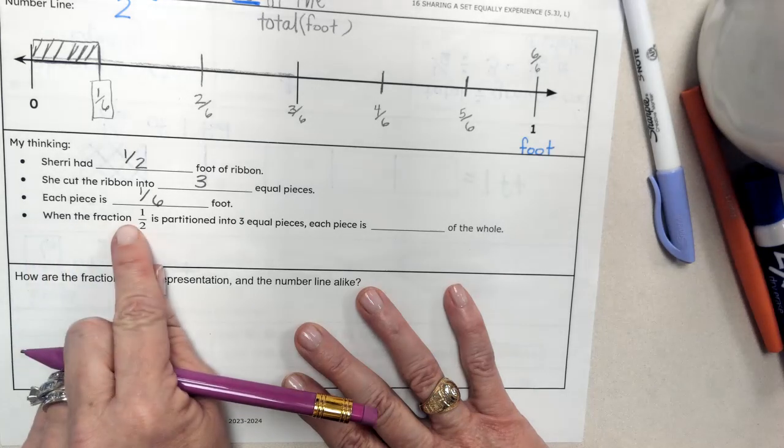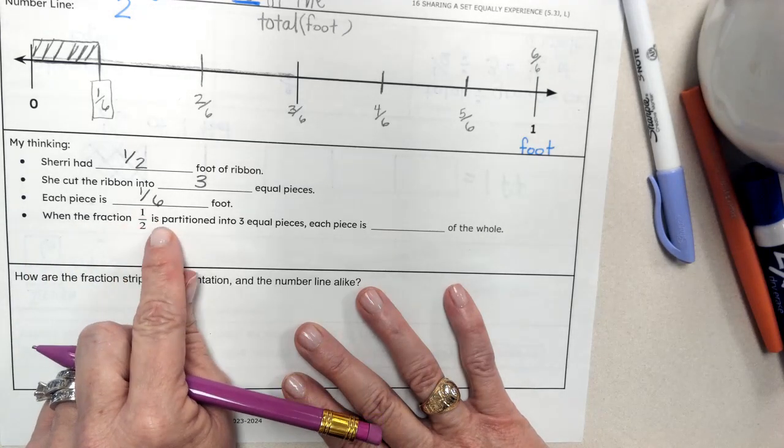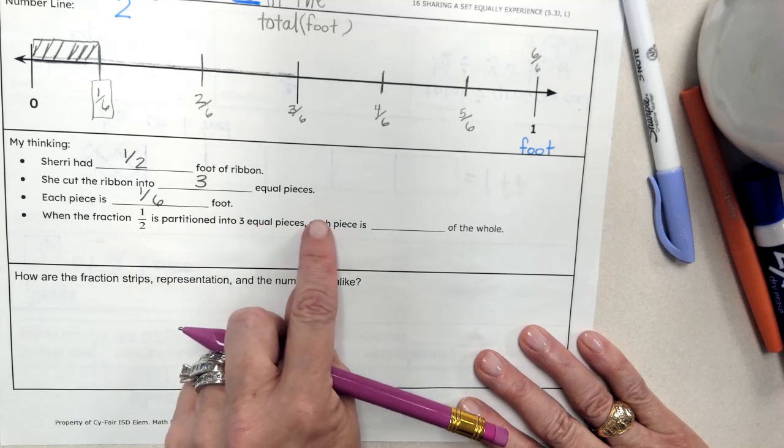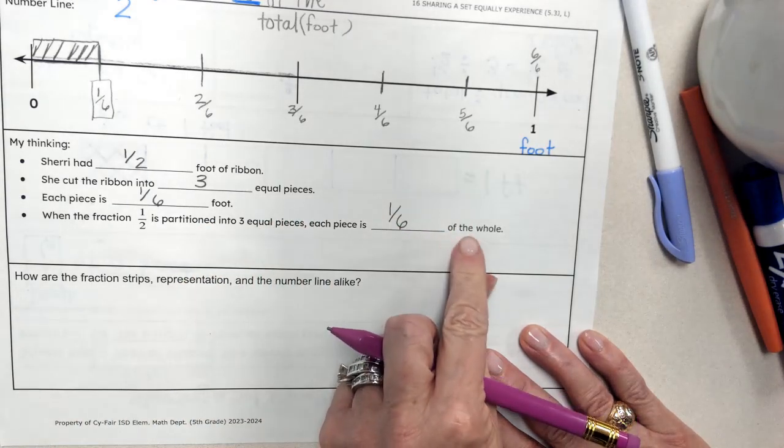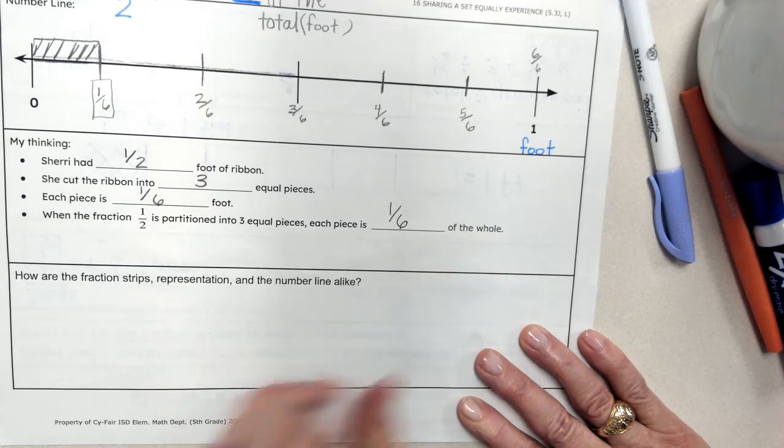So when the fraction one-half is partitioned into three equal pieces, each piece is one-sixth of a foot. Of the whole. Awesome.